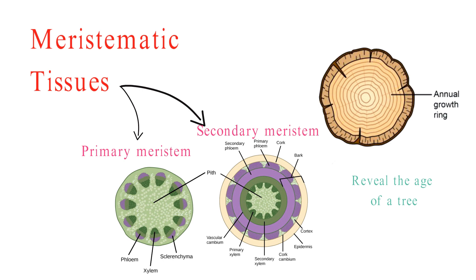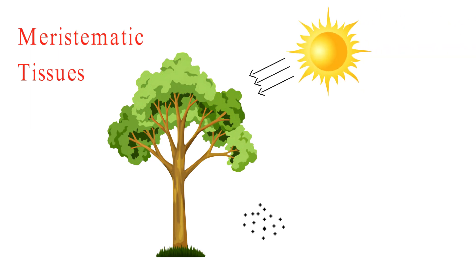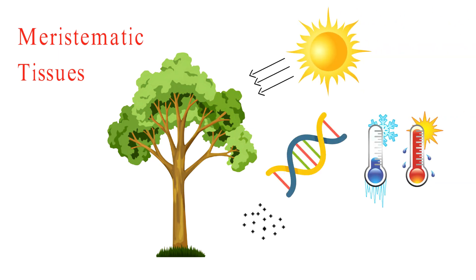These meristematic tissues aren't just passive players — they're masters of growth manipulation. The activity of meristematic tissues is meticulously choreographed by factors like hormones, light, temperature, and genetics. But which of these factors is the true puppet master? Share your thoughts in the comments below.